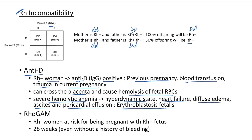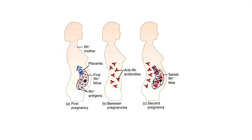Rhogam (anti-D immunoglobulin) is given to Rh-negative women at risk of being pregnant with an Rh-positive fetus, given at 28 weeks even without a history of bleeding. Pathogenesis of erythroblastosis fetalis: in the first pregnancy with an Rh-positive fetus, Rh-positive antigens cross the placenta causing formation of anti-Rh antibodies in the mother, which then affect the second pregnancy leading to erythroblastosis fetalis.